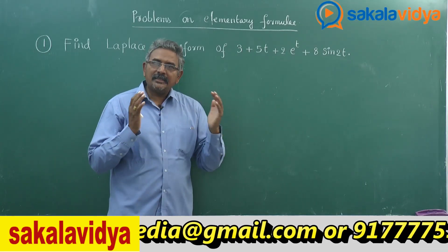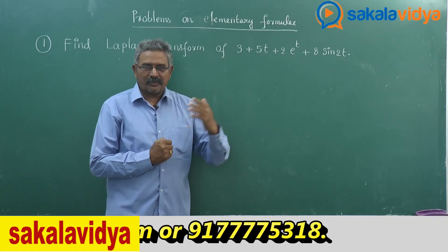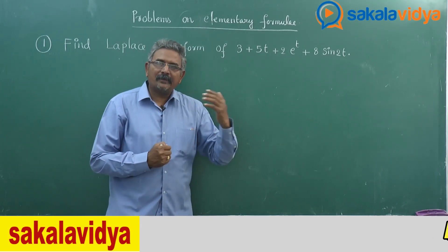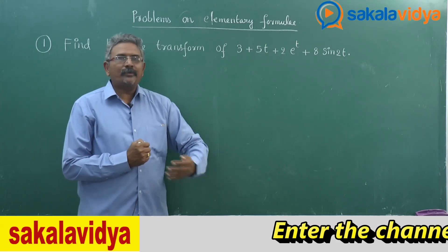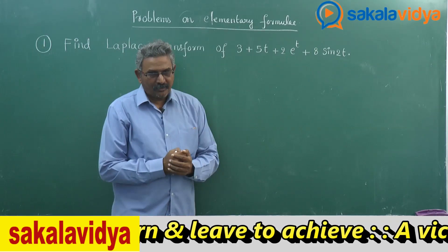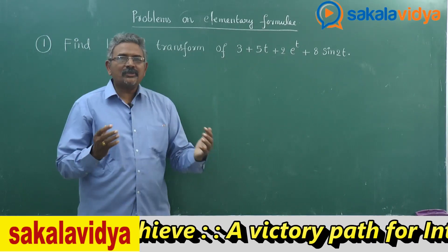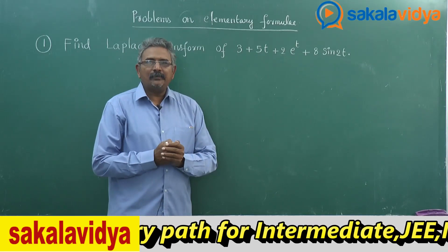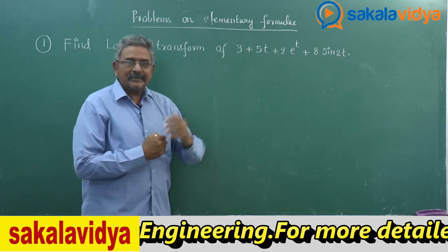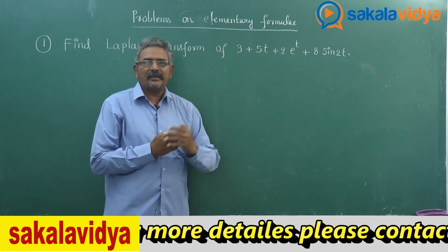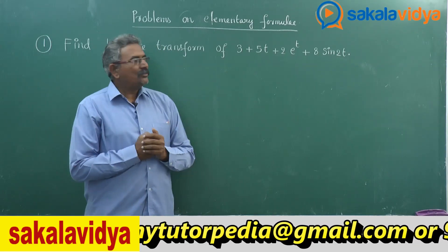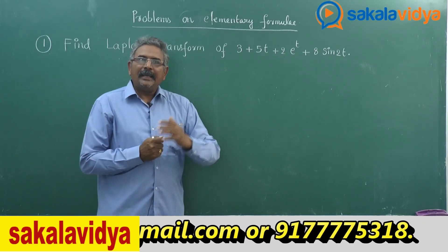Let us recall these three formulae first, then proceed to the problem. The Laplace transform of t^n is n factorial divided by s^(n+1), where n = 0, 1, 2, 3 and so on — that means n is a positive integer. The Laplace transform of e^(at) is 1/(s − a). And the Laplace transform of sin(at) is a divided by (s² + a²). Using these three formulae, let us solve this problem.